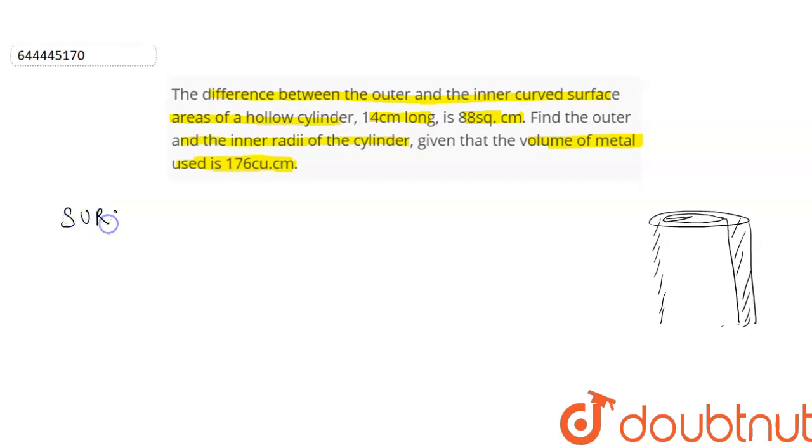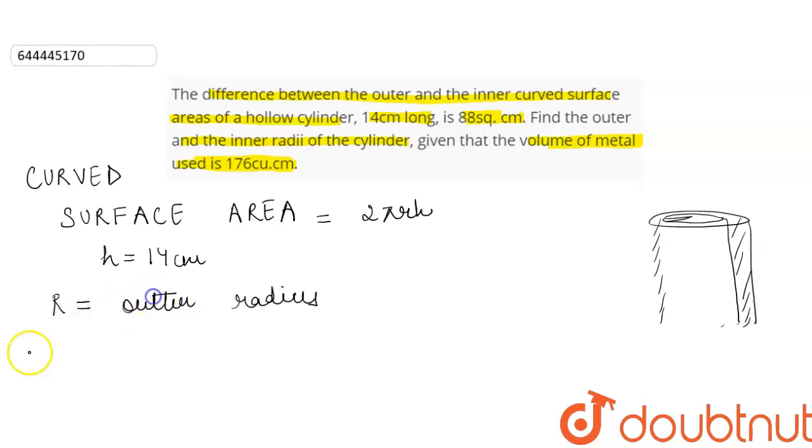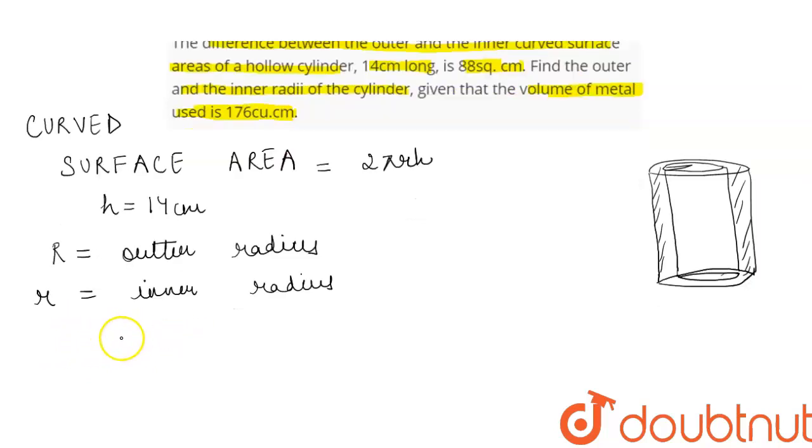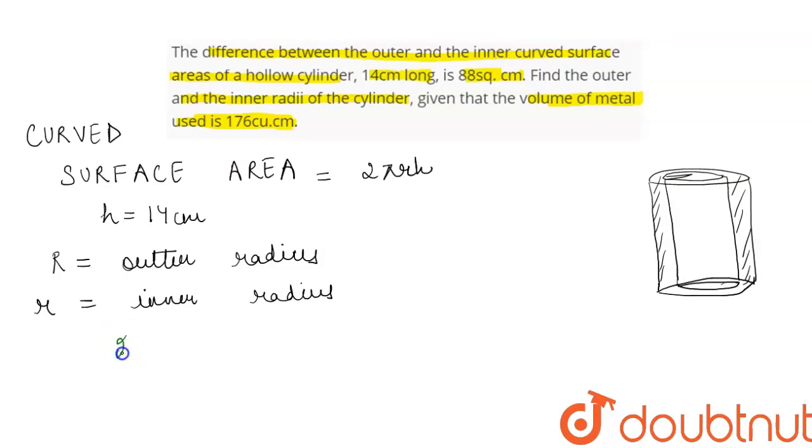We have the formula for the surface area of cylinder which is equal to 2πrh, where our h is given to be equal to 14 centimeters. If we take capital R to be the outer radius and small r to be the inner radius, then according to the question it is given that the outer surface area minus inner surface area is equal to 88.